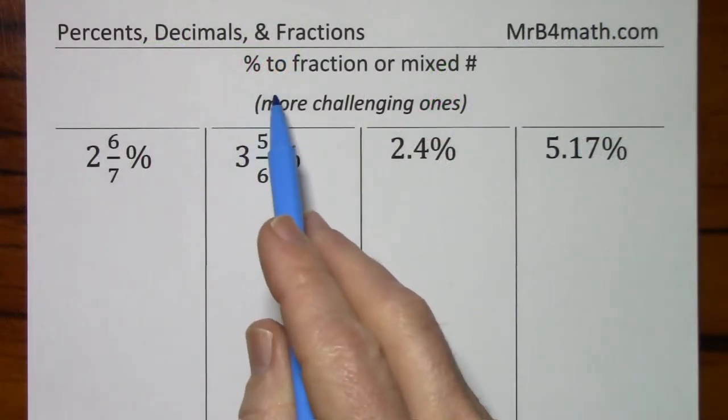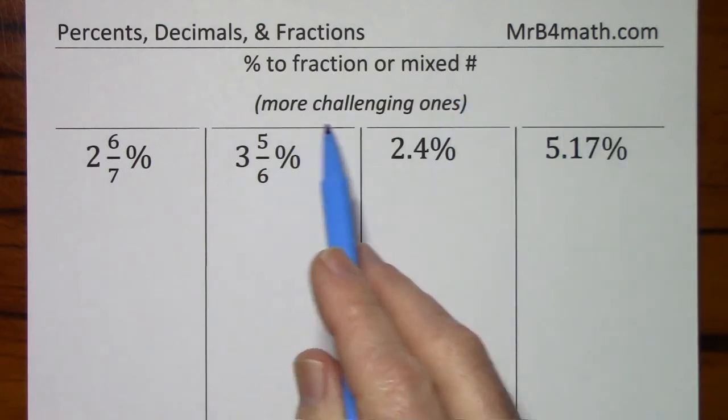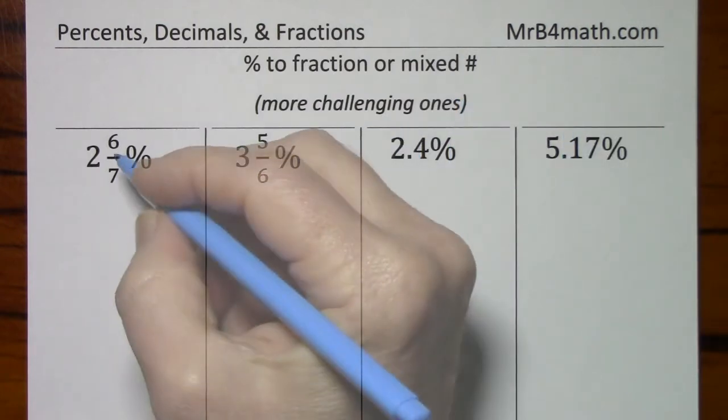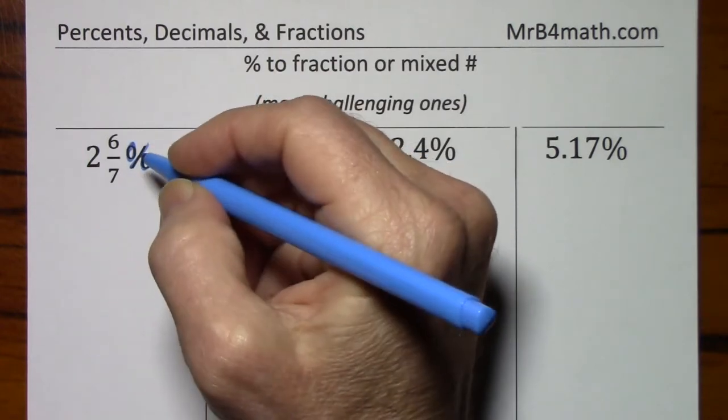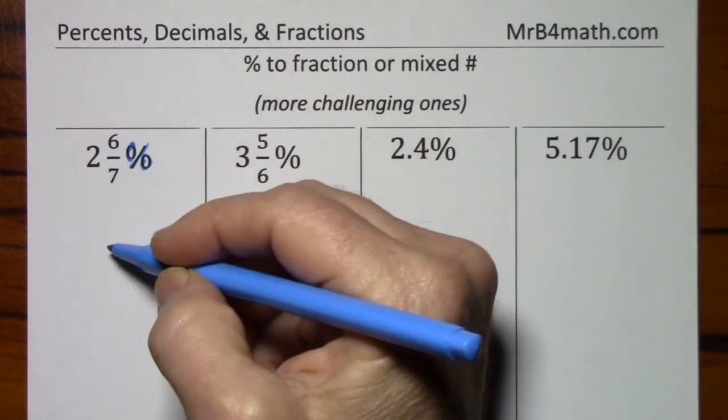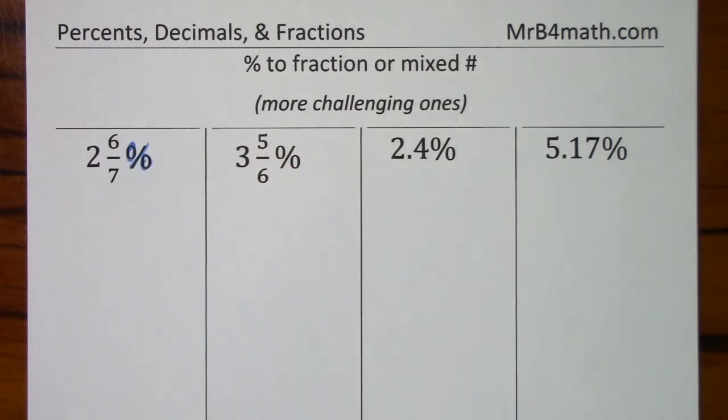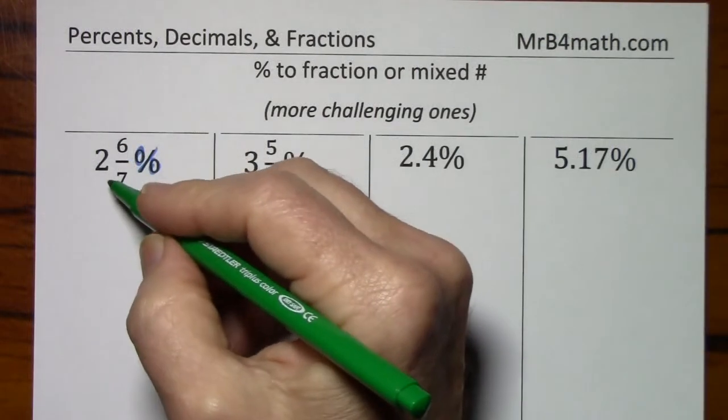Going from percent to fraction or mixed number, sometimes a little more challenging. So 2 and 6 sevenths percent. This percent means per 100. I'll write it a little more lengthy the first time.